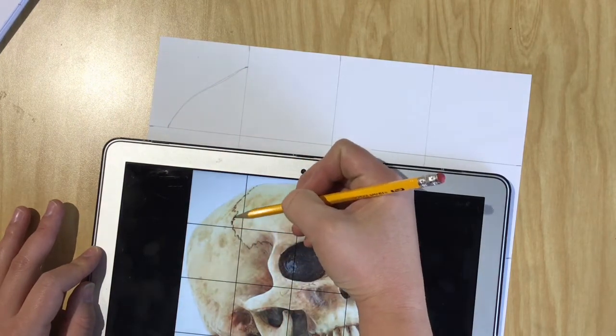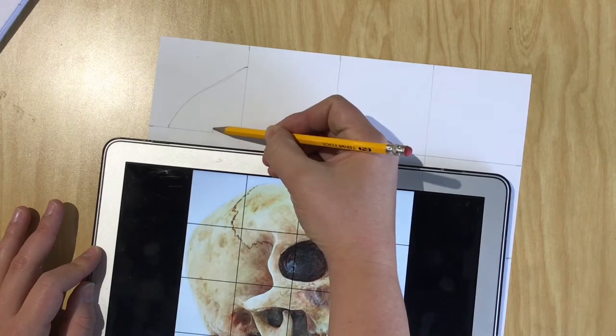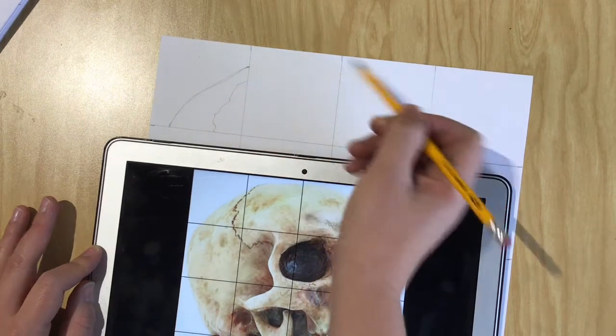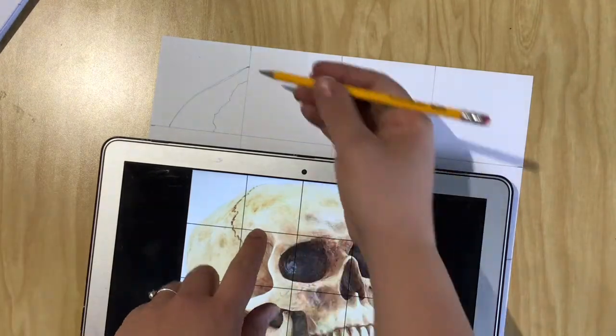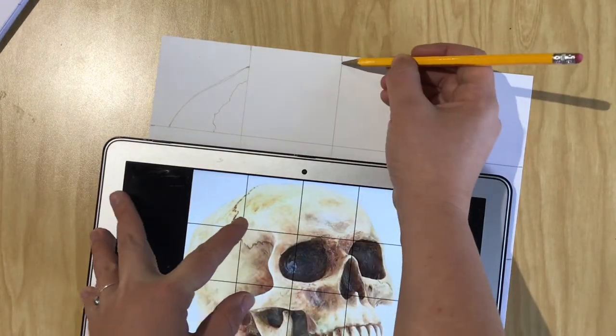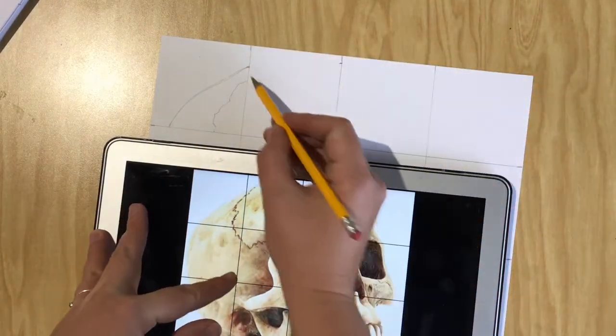I'm going to try to sketch and recreate that box. And there's also this cool crack in the skull that I'm going to try to recreate. And then I move to the next one. So this one continues that curve. It looks like it ends about right here.